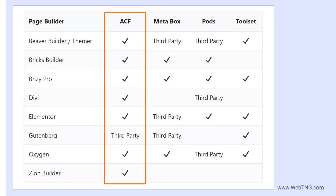Beaver Builder, Beaver Themer, Bricks, Brizipro, Divi, Elementor, Oxygen, and Zion Builder all support ACF. Technically speaking, Gutenberg isn't a page builder, but Toolset is using it that way, so I've included it in the list. And there are several block add-ons for Gutenberg, in addition to Toolset, that let you use Advanced Custom Fields and blocks.